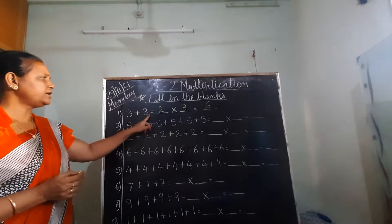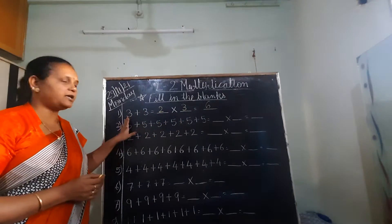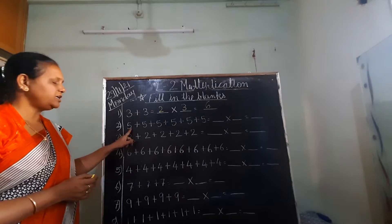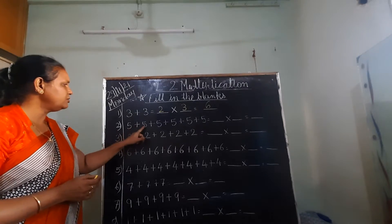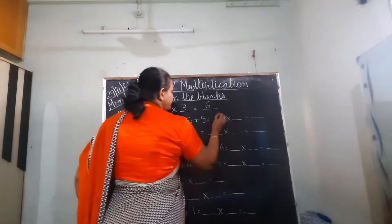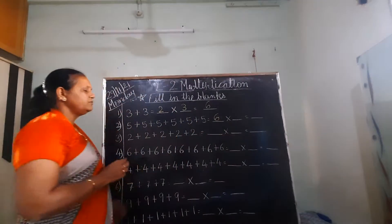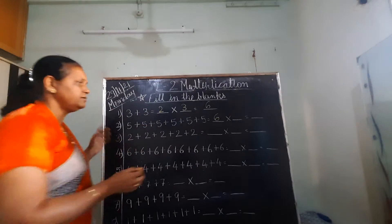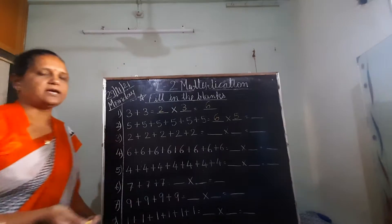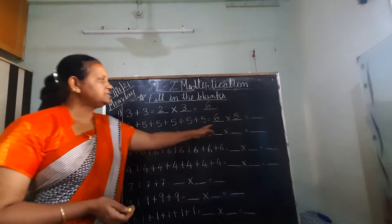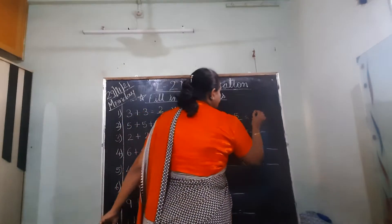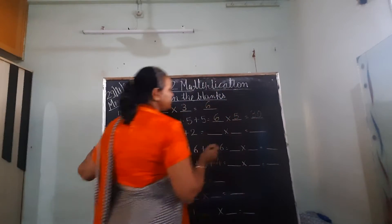Now this one you have to write in single single boxes. How many times is 5 repeated? 1, 2, 3, 4, 5, 6. So write down 6 here. Which number is repeated again and again? 5 is repeated 6 times. So your answer — 6 5's are 30. Write down 30 here.